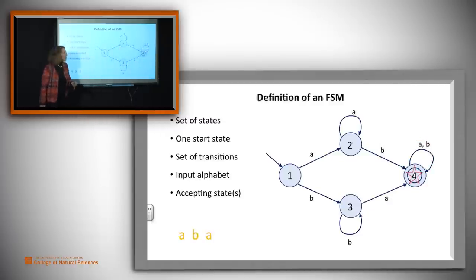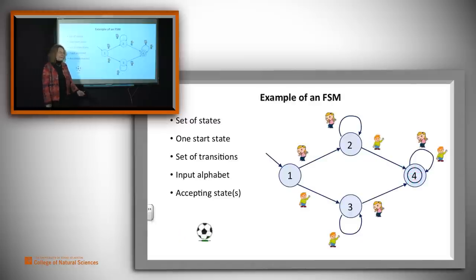We loop back to four. And now we're out of input. We're in state four. State four is accepting, and so we say yes. Now, you might think, why did we care? Why did we care about some sequence of A's and B's? Now let me give you a somewhat more realistic example.